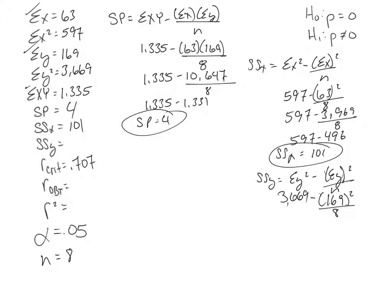So we get 3,669 minus 28,561 divided by 8, or 3,669 minus 3,570, or my sum of squares for my Y variable is 99.